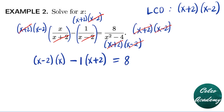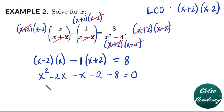Now we apply the distributive property: (x-2) times x gives x²-2x. Distributing the negative 1 gives -x-2. Transferring 8 to the left gives minus 8 equals 0. Combining like terms: x² plus (-2x - x) is -3x, and (-2-8) is -10, so we have x² - 3x - 10 = 0.